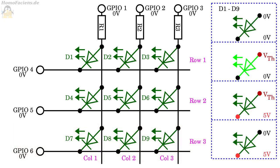If all 6 GPIOs are set to low signal, there is no voltage drop at any of the LEDs and accordingly none of the devices is turned on. If GPIO 1 is switched to high signal, LEDs 1, 4, and 7 start to light up.